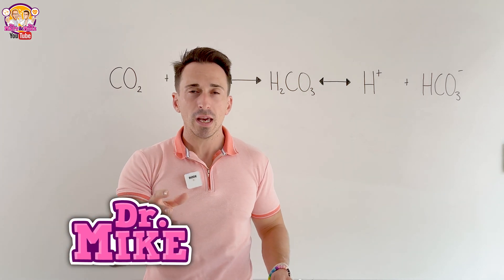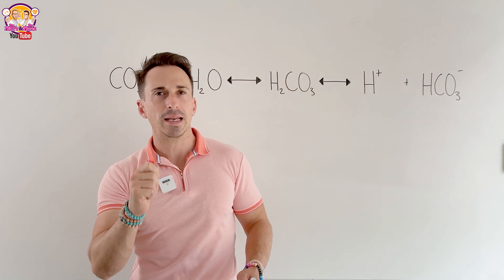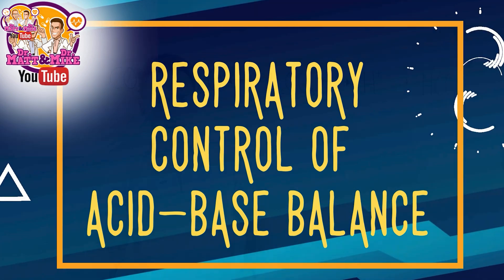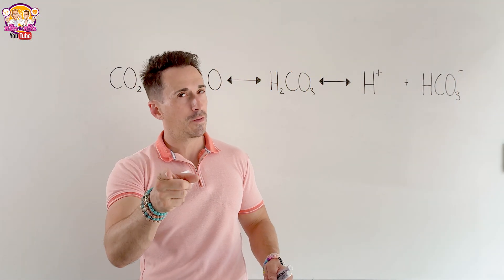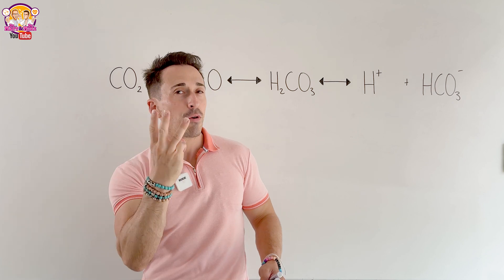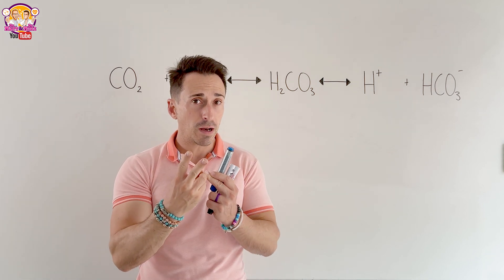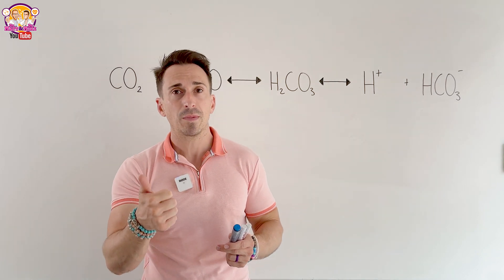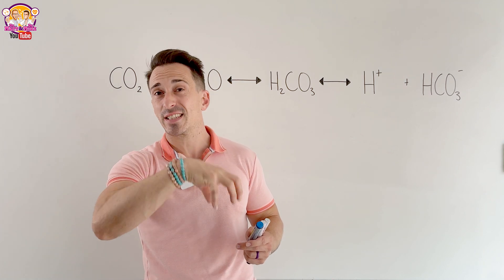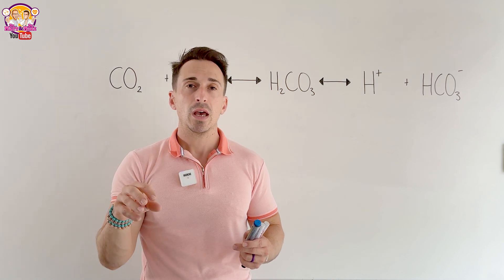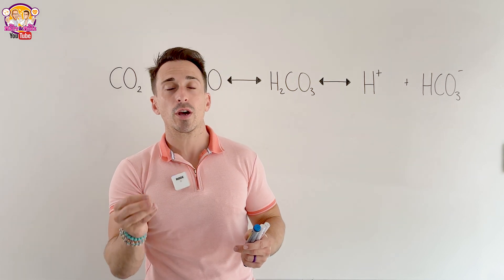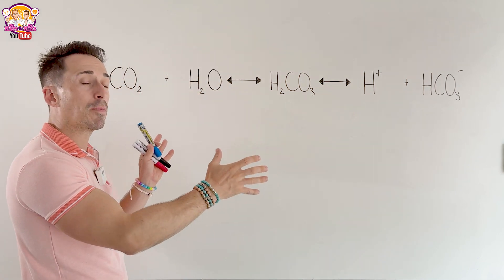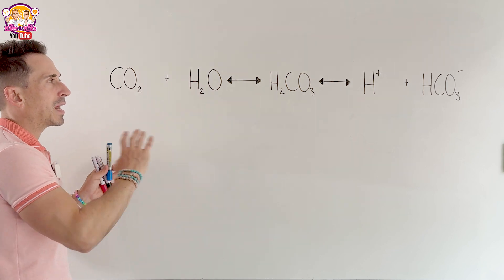Hi everybody, Dr. Mike here. In this video we're taking a look at the respiratory control of acid-base balance. There are three major chemical buffers in the body: the phosphate buffer, the protein buffer, and the bicarbonate buffer. The phosphate buffer mostly works inside cells and at the kidneys. The protein buffer is also great inside cells and is probably the most abundant, but the most important buffer clinically is the bicarbonate buffer.